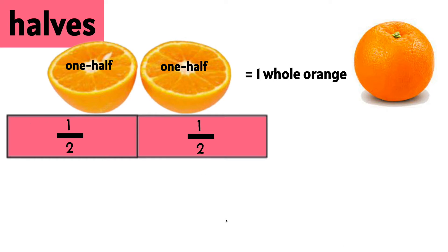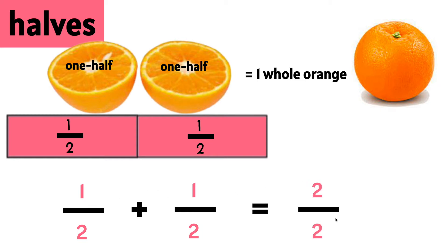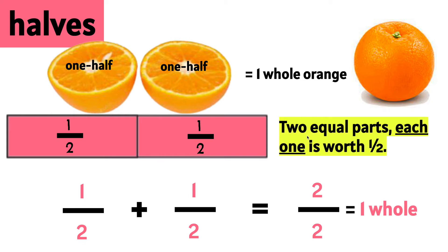In the same way, this model or fraction bar shows we have a half plus another half. If we have both halves, we have two halves, or two out of two parts, and the whole has two parts, so we have one whole. A half or halves are two equal parts — each one is worth a half, and together they make two halves, which is a whole.